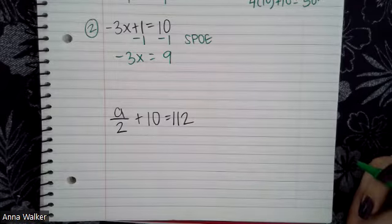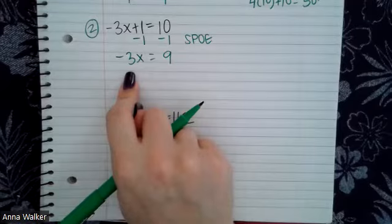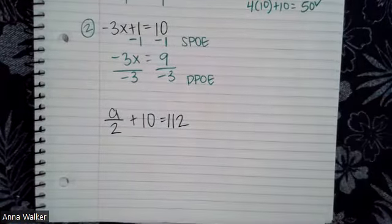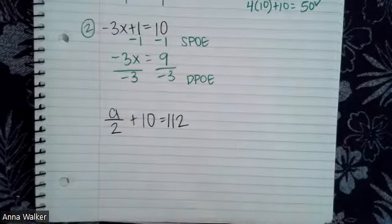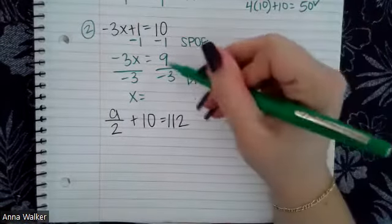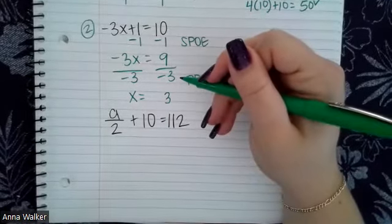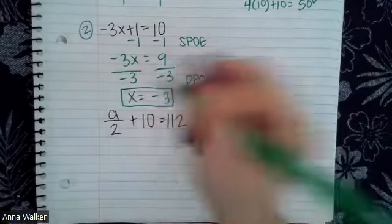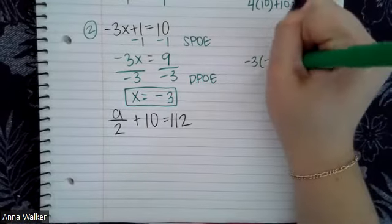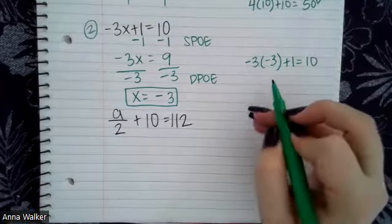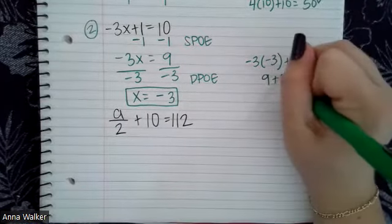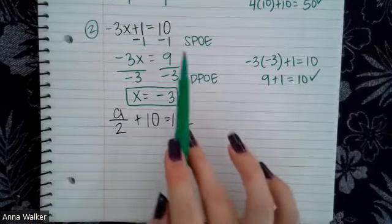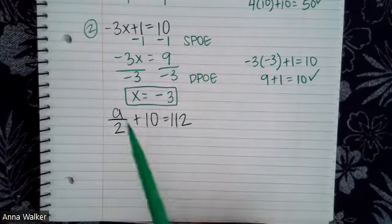Now I don't have any more constants to get rid of, so I'm going to get rid of the coefficient — figuring out what times negative three makes positive nine. I can use the division property of equality, or DEPOT. Negative three divided by negative three is one whole, so X is equivalent to nine divided by negative three. Nine divided by three is three, and since one is positive and one is negative, I use my integer rules: a positive divided by a negative is negative. So X is equivalent to negative three. Checking: negative three times negative three plus one — following order of operations, that's nine plus one, which equals 10. That confirms our answer.